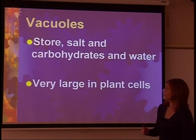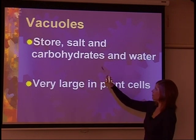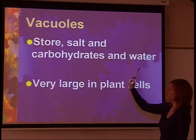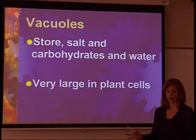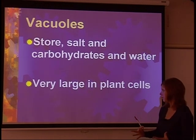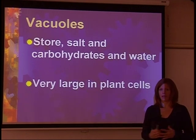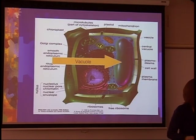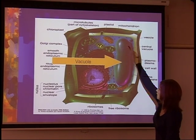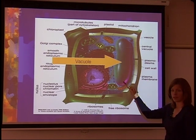Next, we come to vacuoles. Vacuoles are really storage — they're going to store salt, carbohydrates, water. Anything that needs to be stored in the cell will be inside of the vacuole. In a plant cell they're very, very large; animals have them, but they're much smaller. In a plant, this would be the vacuole — notice how large it is inside the plant cell.